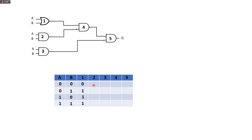For gate 2, the truth table — this is an AND gate. The truth table is: 0 and 0 is 0, 0 and 1 is 0, 1 and 0 is 0, and 1 and 1 is 1. For an AND gate, both inputs must be 1. If any one of them is 0, the output is 0. Both must be on for the gate to work. So the outputs are 0, 0, 0, 1. Gate 3 is also an AND gate, same results: 0, 0, 0, 1.